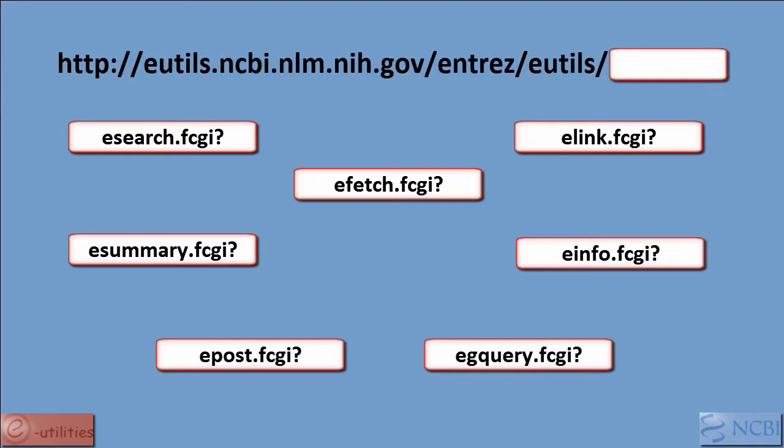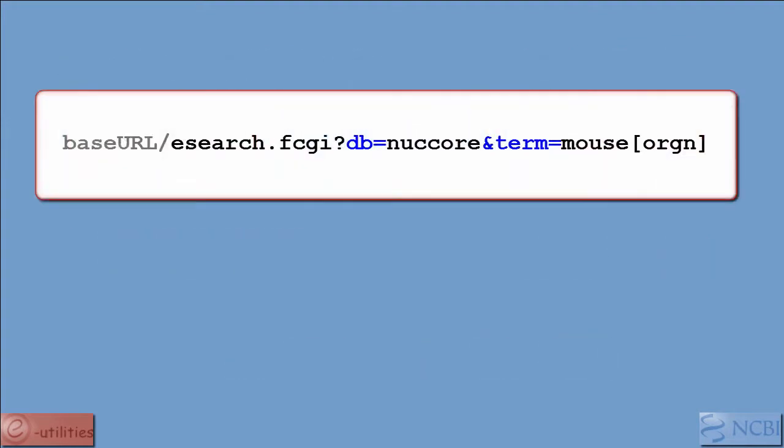Let's take a brief look at how some of them work. eSearch accepts a text query in a specified database and returns integer identifiers, or UIDs, for the matching records. For example, the URL shown will return UIDs for all mouse sequences in the Nucleotide database.